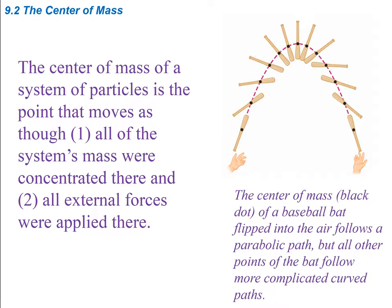The center of mass of a system of particles is the point that moves as though all of the system's mass were concentrated there, and all of the external forces were applied. To simplify an object, previously we've just said that all of the mass is basically located at one point, and that's what's moving. But sometimes objects are oblong, such as a baseball bat, and we can find that center of mass and simplify it so that all the mass is concentrated at this point, and all the forces acting on the object are acting at this singular point.